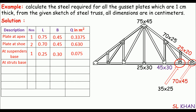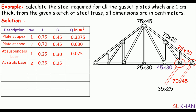Moving ahead, let me calculate the plates at the truss base. There are two types with different sizes. The first type: there are two plates with dimensions 35×25 centimeters, or 0.35×0.25 meters. Multiplying these three values gives a quantity of 0.175 square meters.